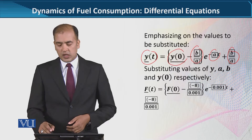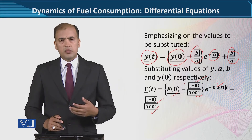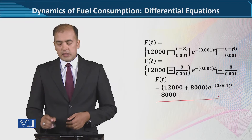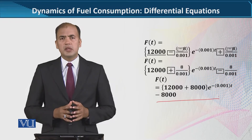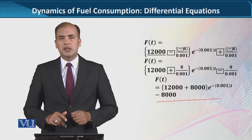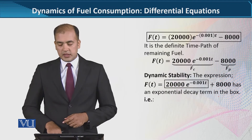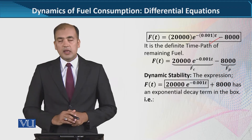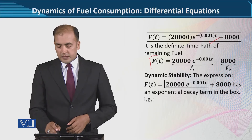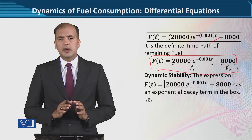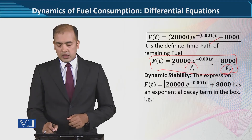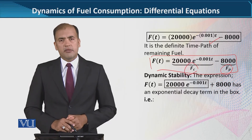In the next step, substitution is carried out. All these values are substituted, and further steps involve straightforward numerical and basic algebra steps that you can handle. You can pause the video and do these steps. Finally, you will get the time path, which is definite in nature for fuel consumption. It can be rewritten to show two components: one is the particular integral, shown as fp, and the other is the complementary function, shown as fc.